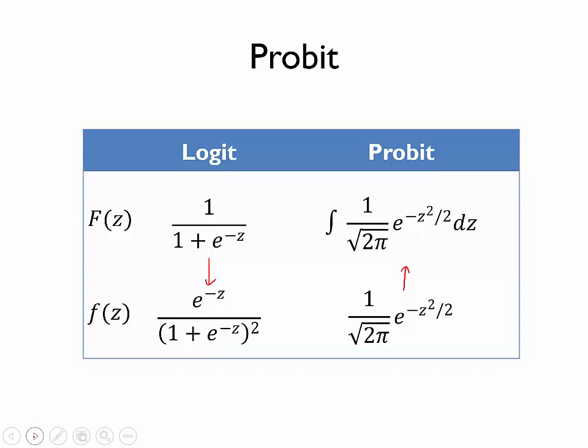You might notice that I've left the integral in there, and that is because there is no closed form solution to that integral. There's no other way that we can write that. However, a computer can easily calculate that capital F of z. So everything that we've discussed with the logit model—whether you are trying to calculate a predicted probability by calculating z and then plugging the value of z into capital F of z, or you're trying to calculate a marginal effect by multiplying the relevant coefficient times the lowercase f of z—we can do the exact same thing with the probit model. We just have to use these formulas on the right as opposed to the formulas on the left.